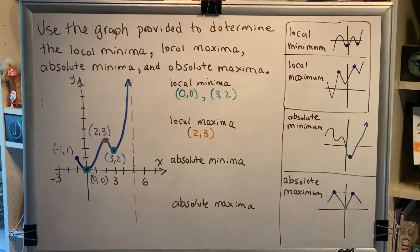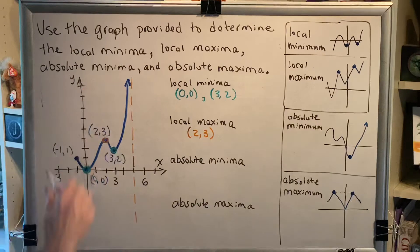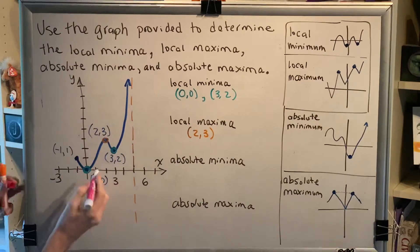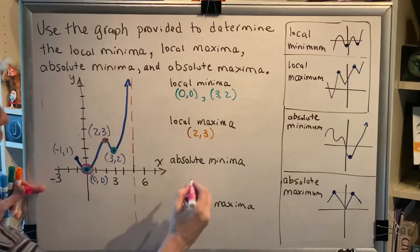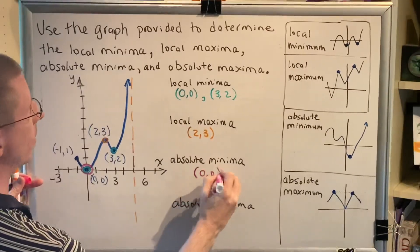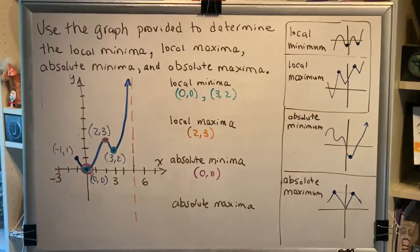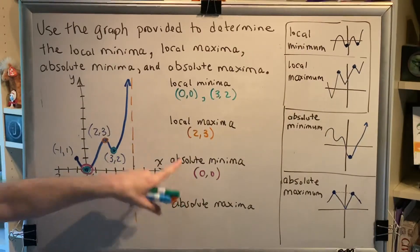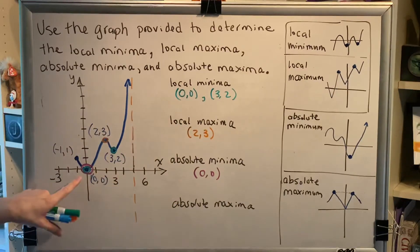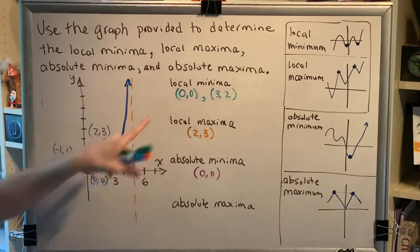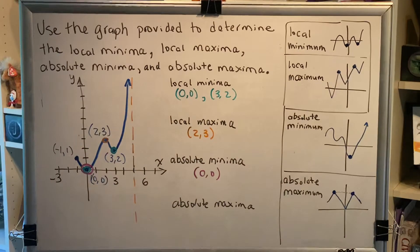For absolute minima, we want the lowest of all points of the entire graph. Looking at the blue curve, the point closest to the bottom is (0, 0). So our only absolute minimum point is (0, 0). This illustrates a very important characteristic: one point can satisfy two different categories at the same time. The origin (0, 0) is both an absolute minimum and a local minimum simultaneously.